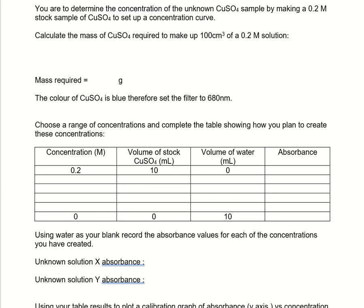The first thing we're going to be doing is making up a solution. We want a 0.2 molar solution and we want 100 cubic centimetres of it. Hopefully you're a bit more comfortable with using the calculations. The first thing I can do with the concentration and the volume is work out the number of moles. So based on the calculation, n equals cv. My concentration is 0.2, times it by 100 over 1000 cm³ converted. So doing that, we can work out the number of moles.